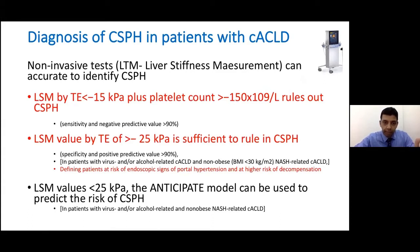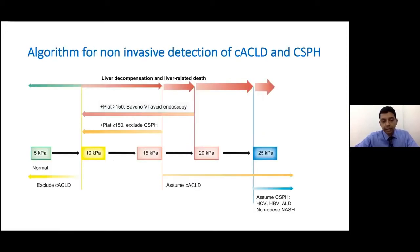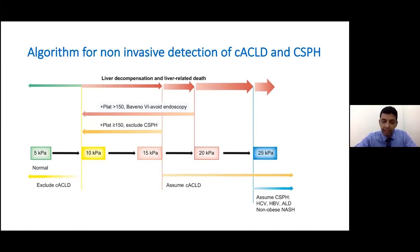How does FibroScan help in monitoring clinically significant portal hypertension? If liver stiffness is low and platelet count is high — more than 150 — it rules out clinically significant portal hypertension. If liver stiffness is more than 25, that alone is sufficient to diagnose clinically significant portal hypertension without endoscopy. Values in between are associated with about 60% likelihood of CSPH. The rule of five summarizes this: less than 5 excludes, more than 15 makes cACLD and CSPH more likely.